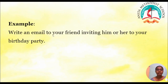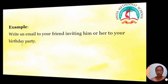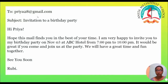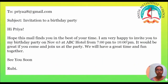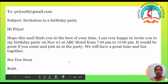Let us see an example. Write an email to your friend inviting him or her to your birthday party. To: Priyam28 at gmail.com. Subject: Invitation to your birthday party. Hi Priyam, I hope this mail finds you in the best of your time. I am very happy to invite you to my birthday party on November 3 at ABC Hotel from 7pm to 10pm. It would be great if you come and join us at the party. We will have a great time and fun together. See you soon, Priyam. This is one of the examples for informal email writing.